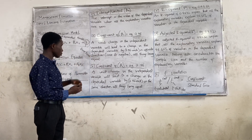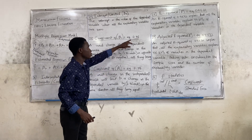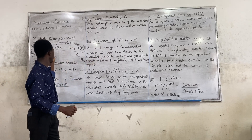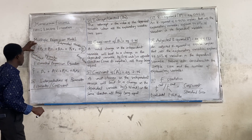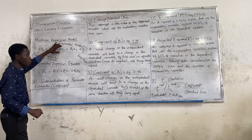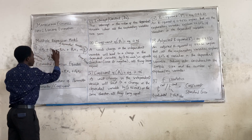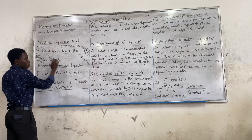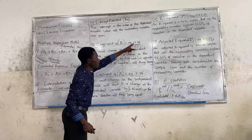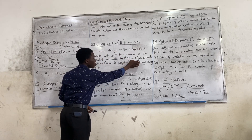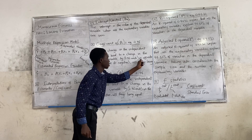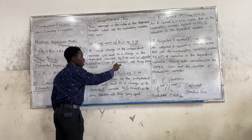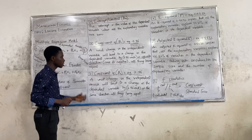Let's move on to β₁. With β₁, let's assume an example: it's negative 2.4. A unit change in the independent variable leads to a change in the dependent variable. If it's negative — say negative 2.4 — since it's negative, by 2.4, in the opposite direction, all things being not equal. It's the same approach you use for β₂.